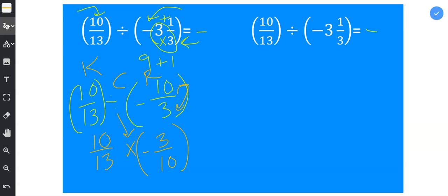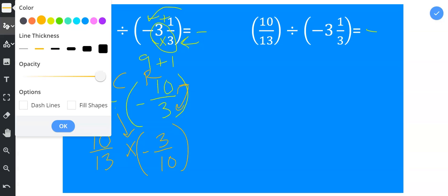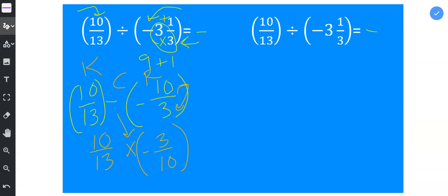And then from here, what I would like to show you is that one option you have is to reduce diagonally first. Now, I see that 10 and 10 are both divisible by 10, so I can divide them both by 10. And I would get 10 divided by 10 to be 1, and then I can multiply across.